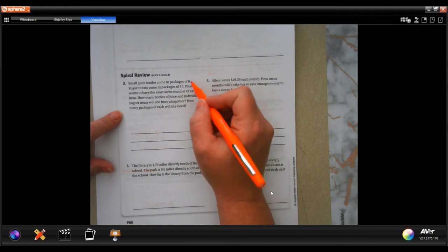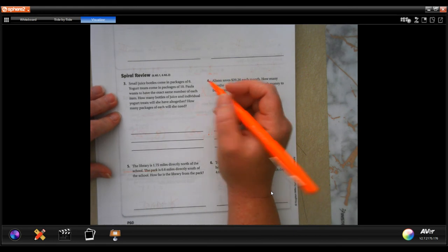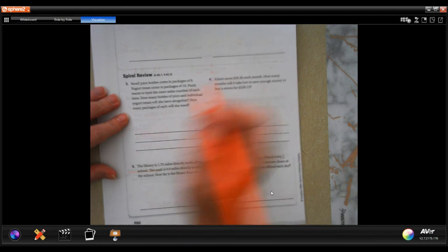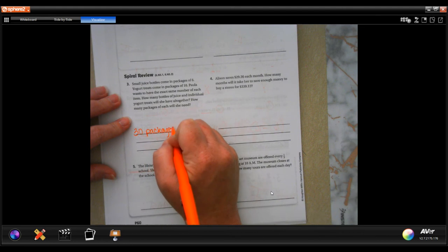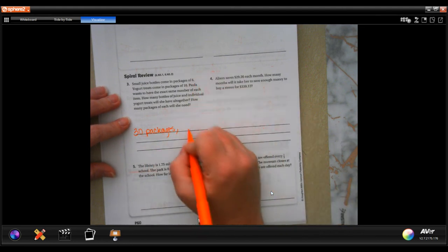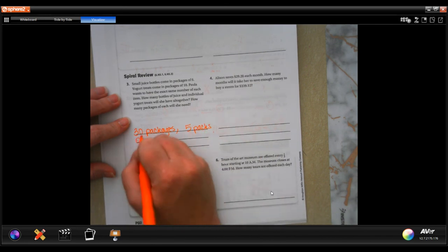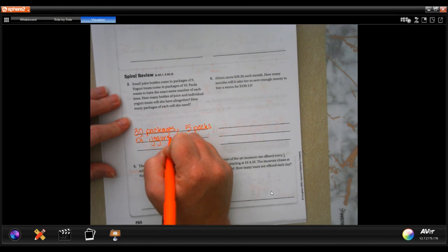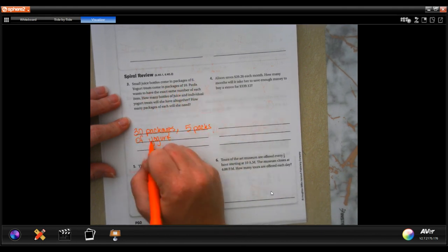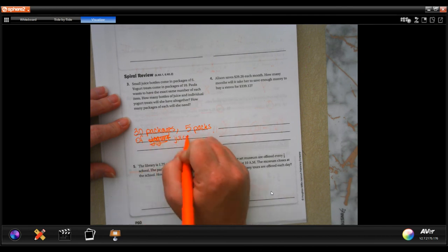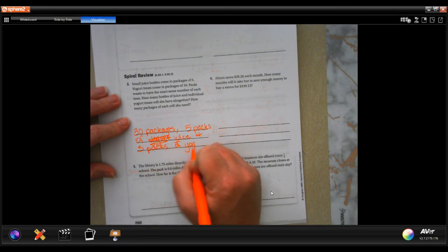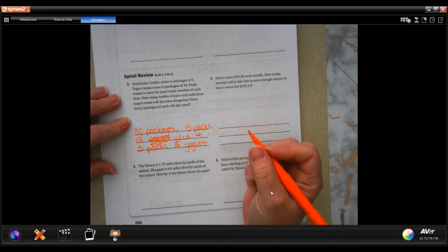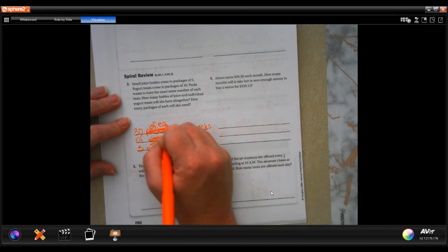So we are going to find out the smallest number that six and ten both go into is 30. Six times five is 30, three times ten is 30, so 30 packages. Now six, sorry, five packs of juice and three packs of yogurt. Sorry, not 30 packages, 30 of each. Goodness, Miss Leah cannot get it right today.